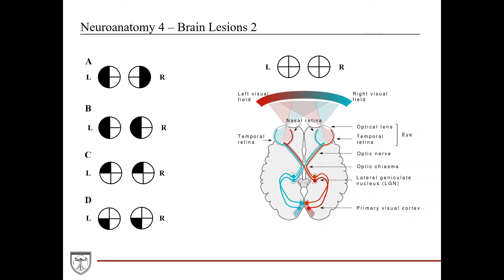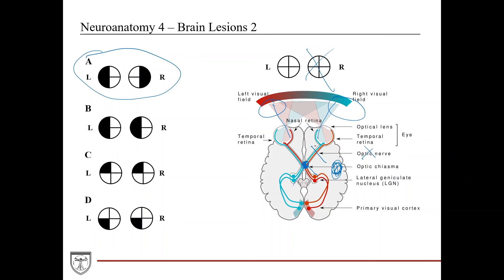Going through the answer choices: a lesion at the optic nerve would cause loss of an entire eye's vision, which doesn't match the choices. Moving to the optic chiasm — fibers from the inner retina cross here, corresponding to the outer visual fields. A chiasm lesion interrupts these crossing fibers, causing bitemporal hemianopia, or tunnel vision — that's answer A. However, our lesion is in the temporal lobe, so this seems less likely.